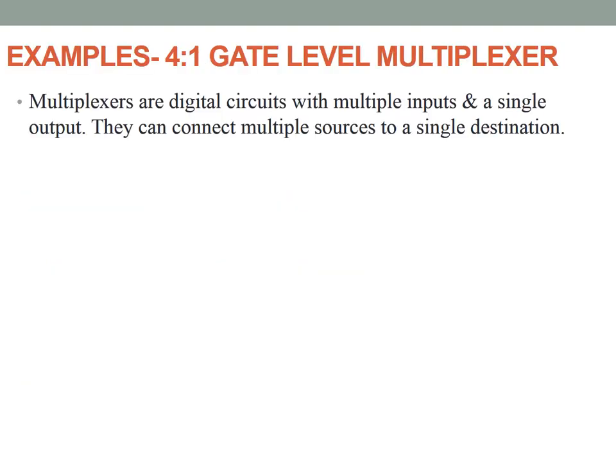To begin with, we all know that multiplexers are digital circuits which have multiple inputs but a single output. One out of the multiple inputs is selected and transmitted to the output based on the value of the selection lines. Basically, they can connect multiple sources to a single destination.